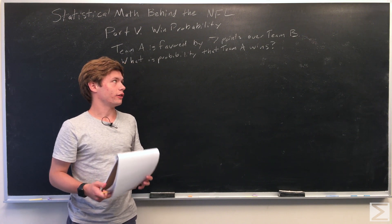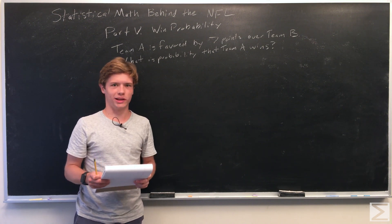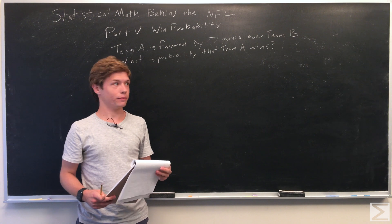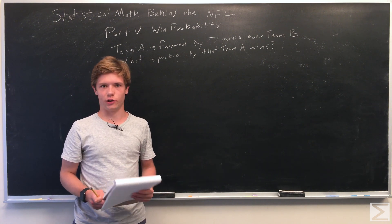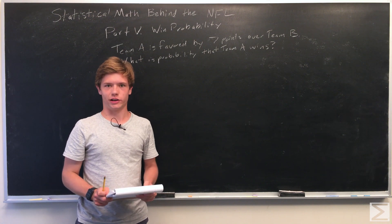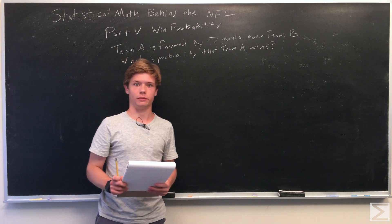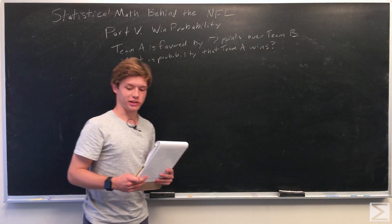So first we're going to draw, and because this is probability, the main way win probability is calculated is using just a normalized probability curve. So we'll draw this out and then add numbers in.